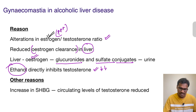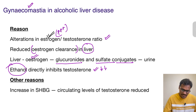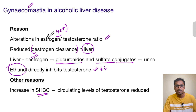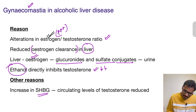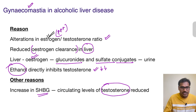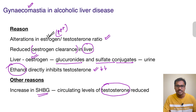Other reasons quoted include an increase in SHBG, that is sex hormone binding globulin. What does SHBG do? It binds with testosterone and reduces the level of circulating testosterone, thereby again reducing testosterone levels. So the overall theme is estrogen levels are increasing and testosterone levels are coming down.